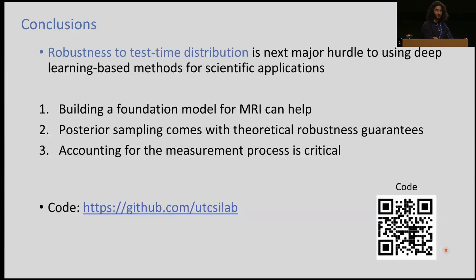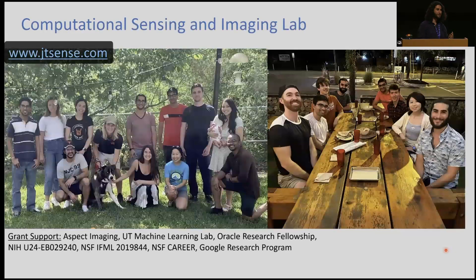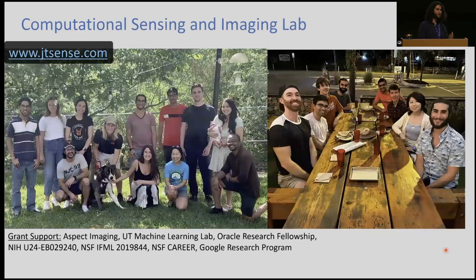To conclude: I think robustness to test-time distributions is the next major hurdle to using deep learning-based methods in clinical and scientific applications, and building a foundation model for MRI might be one way to do it. Posterior sampling is an attractive reconstruction method, and accounting for the measurement process is critical. I'd like to thank the members of my group at the CSI Lab, our funding sponsors, and hopefully you in the future.